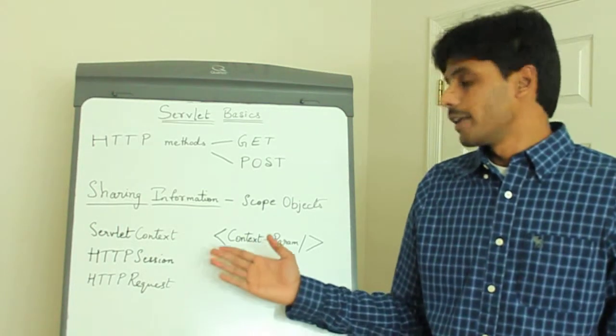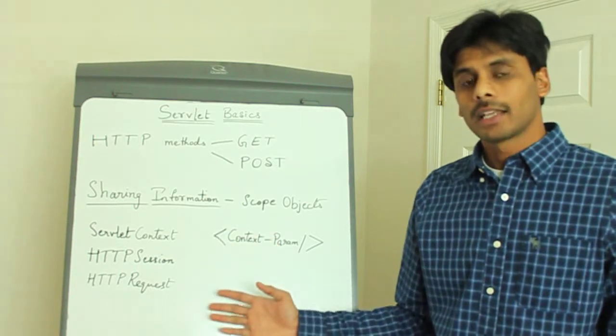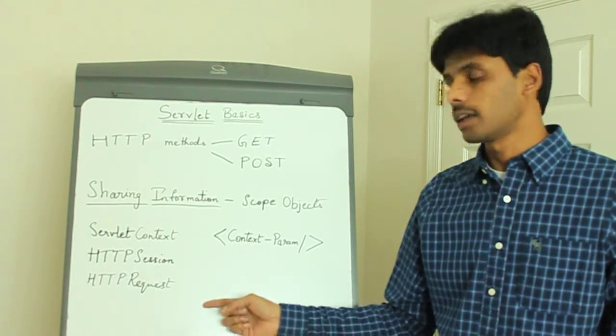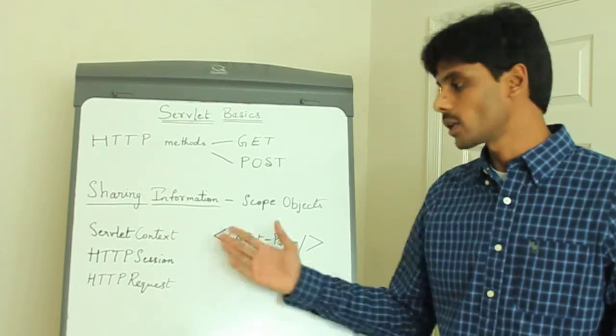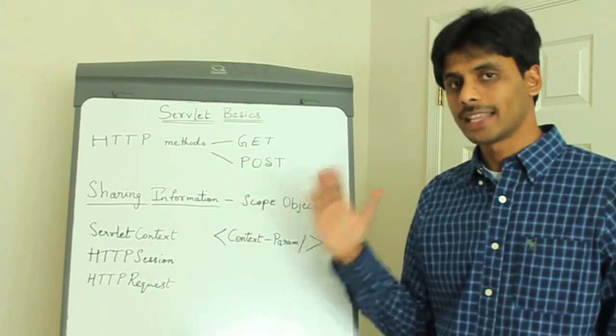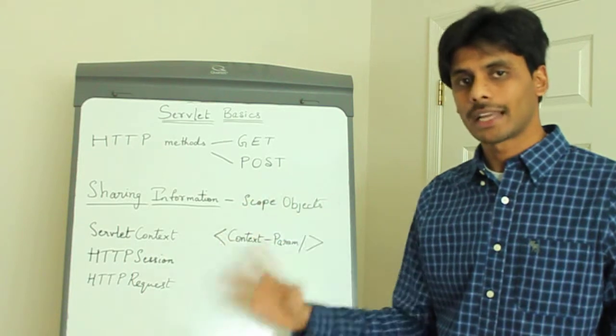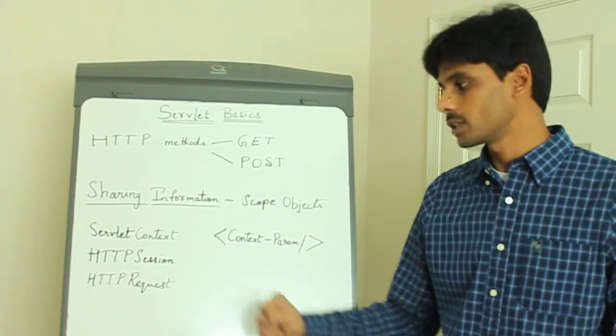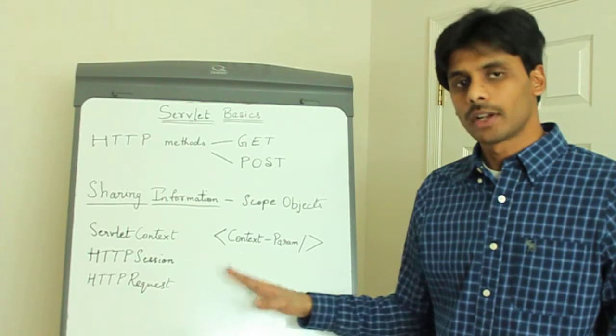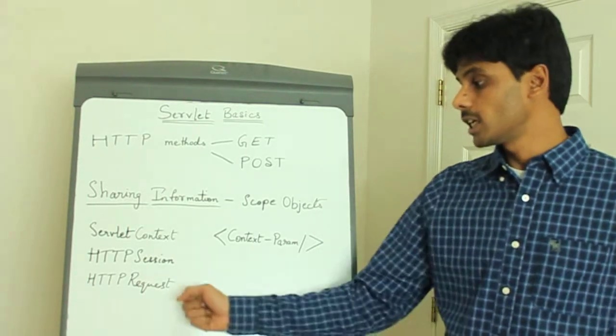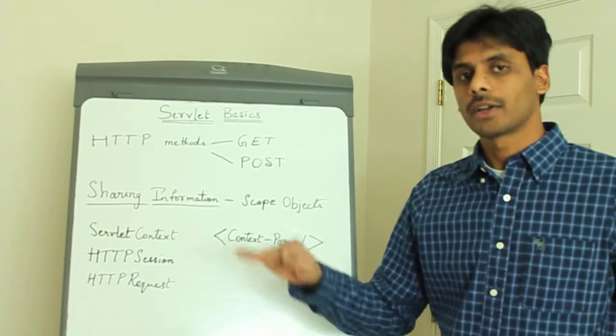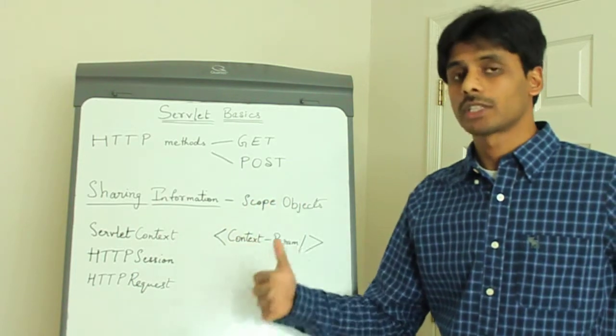And you also saw the various interfaces within the servlet API that a container provides your servlets and JSPs with at runtime. Using these, your servlets and JSPs can share information with each other. These are also called scope objects. The servlet context is the web application scope—anything set into it is available for the entire web application, any page, any resource. The HTTP session scope is per session, and I'll be presenting more details on session management in my next presentation. And the HTTP request is only for that request. Anything here will be available for any servlet or JSP that the request is being forwarded to.